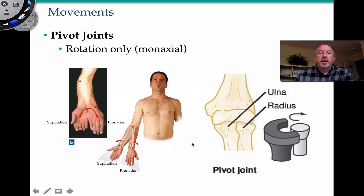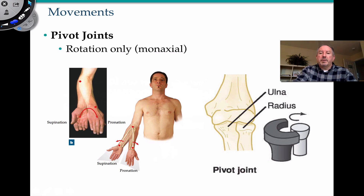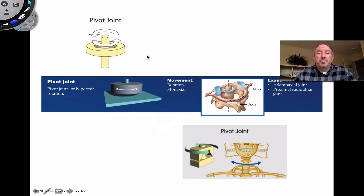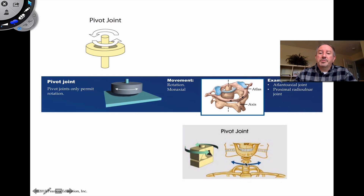A pivot joint allows the pronation and supination we discussed earlier — the pivoting rotational move at the elbow joint, allowing the radius and ulna to interact. Another important example of a pivot joint is the 'no' motion of the skull as it articulates with the first and second cervical vertebrae, where the dens provides an example of a pivot joint rotation.